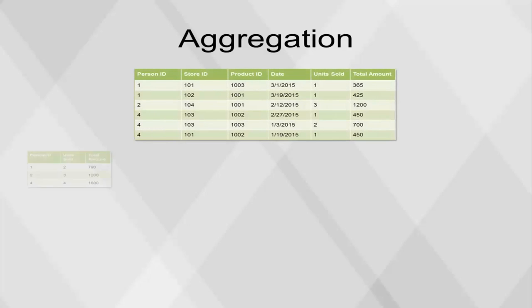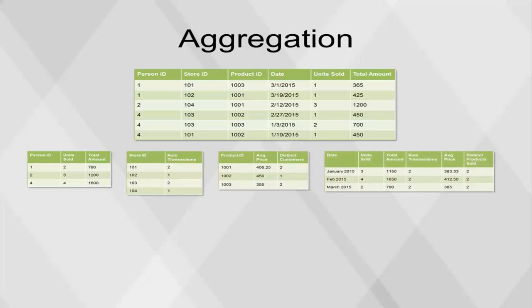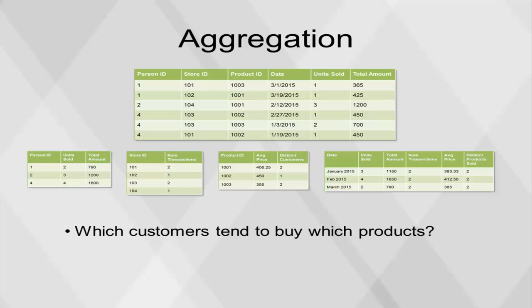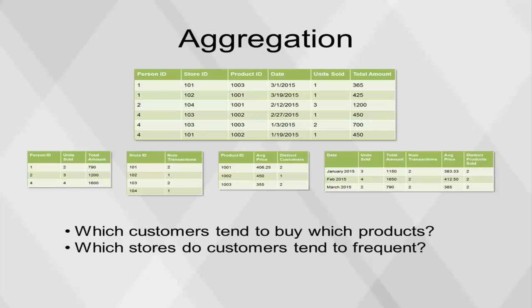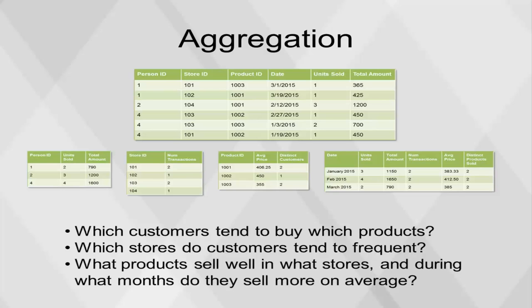Note that the more unique dimensions a data table contains, the more the number of possible levels of aggregation increases. In this example table with four unique dimensions, there are 14 different possible levels of aggregation. Each different level of aggregation can offer a unique insight, but it's best to start with two or fewer levels. Example questions that can be answered using the example transaction data set include: which customers tend to buy which products? Which stores do customers tend to frequent? What products sell well in what stores? And during what months do they sell more on average?